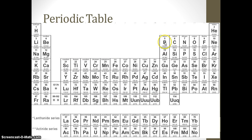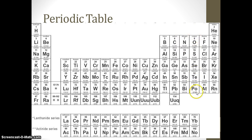Then we have the boron family, then the carbon family. Then we have the nitrogen family, with nitrogen as the head. Then we have the chalcogens, with oxygen. The halogens, with fluorine as the head of the family. And finally, the noble gases, which is the last column on the periodic table.